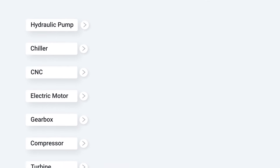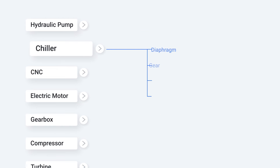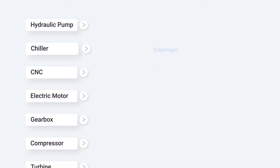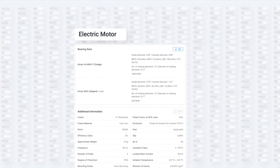Equipment type, for example, accounts for approximately 50% of our current registered asset base. By filling in the motor ID field, the platform will search our more than 6 million motor models to fill in the other asset specifications, all automatically.